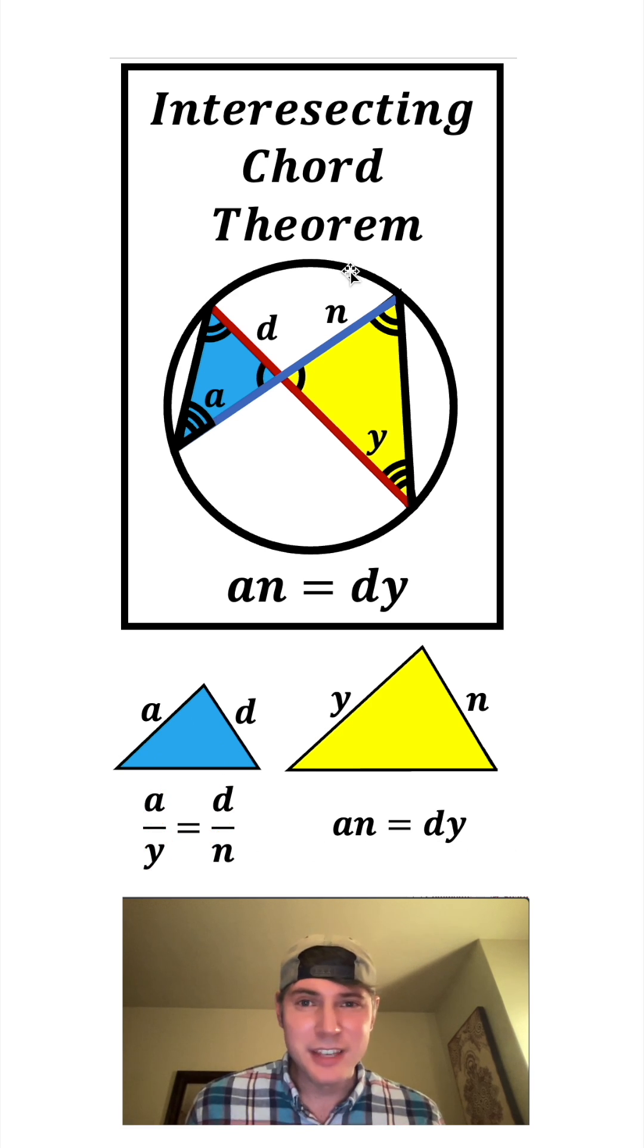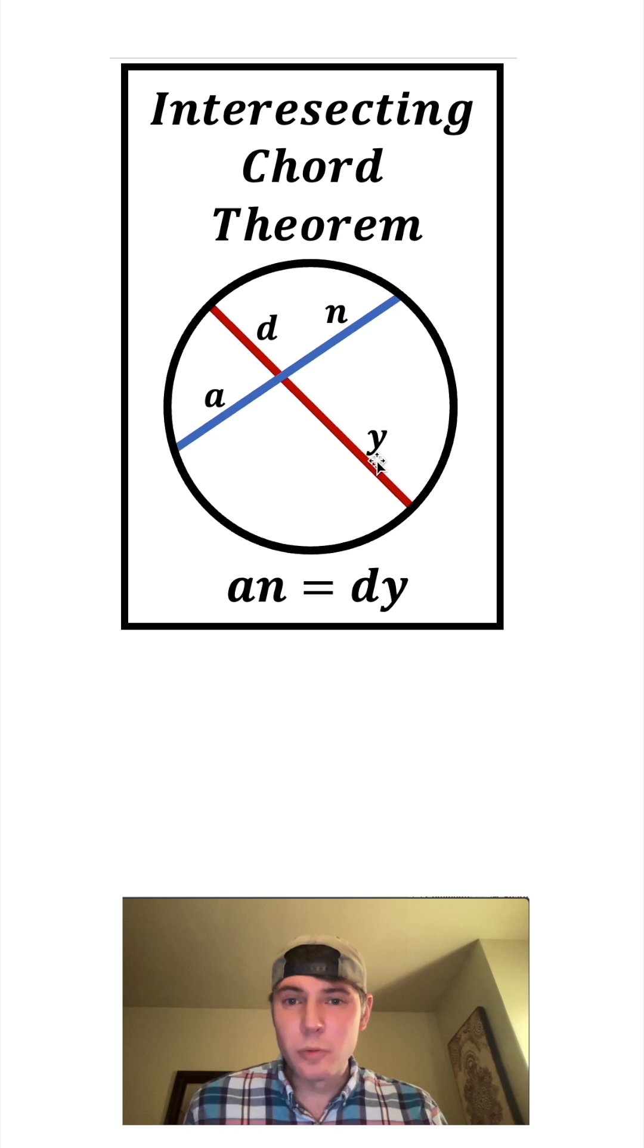This is an informal proof of why the intersecting chord theorem works. So no matter where your two chords are, it will always be true that this times this equals this times this. How exciting.